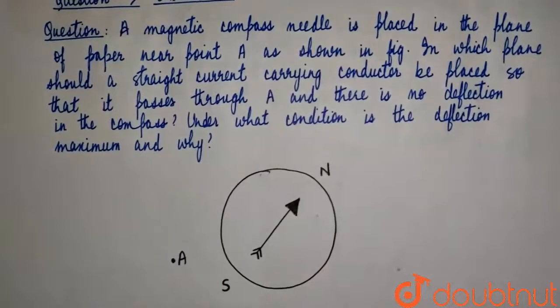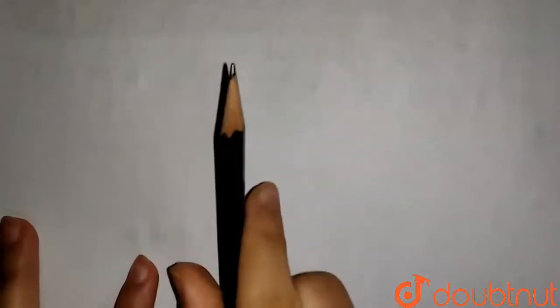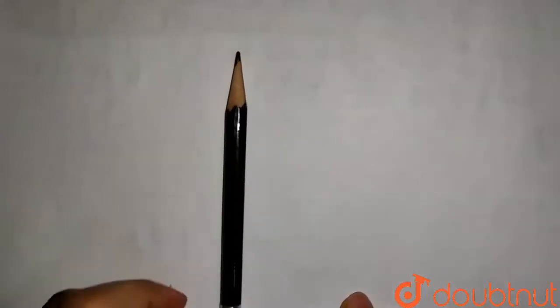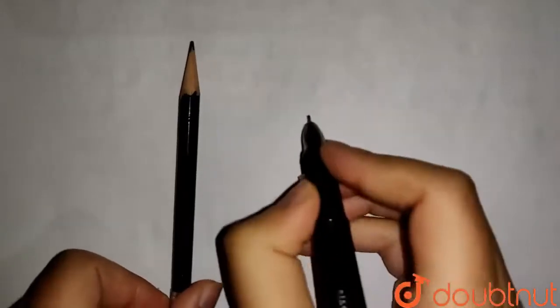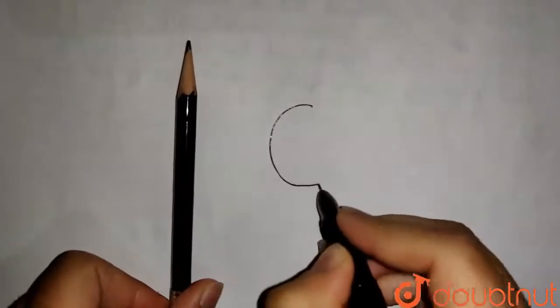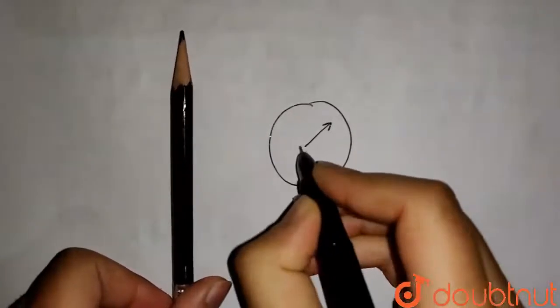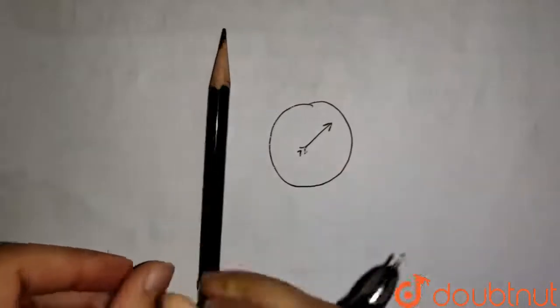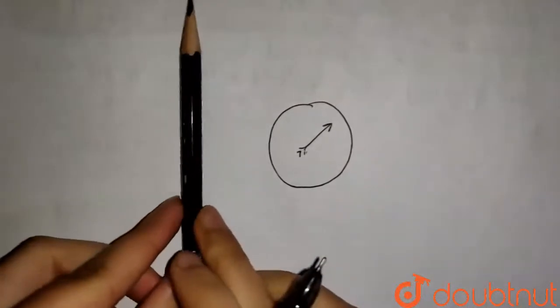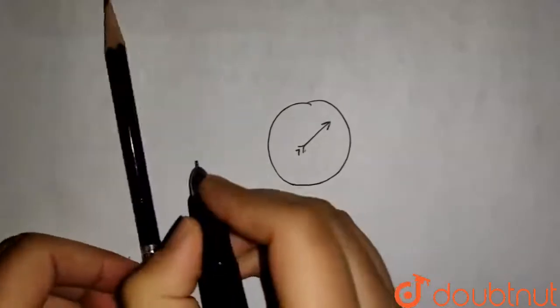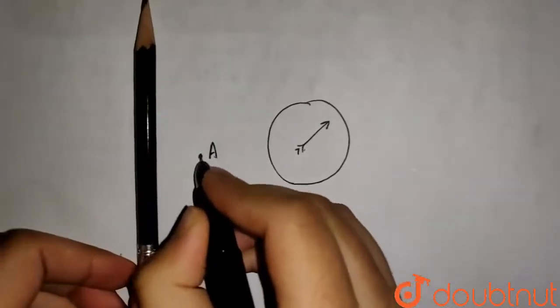So let's understand this using an example. This is a plane of paper and this is our conductor — a straight current-carrying conductor. It has been placed in the same plane as that of the compass. This is our compass that is in the plane of the paper, and in the same plane we have placed a conductor near some point A.